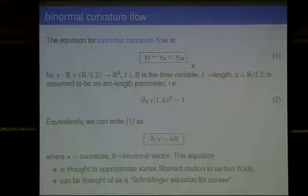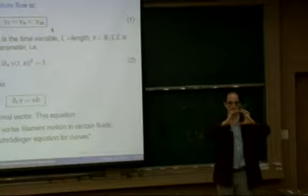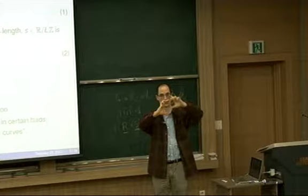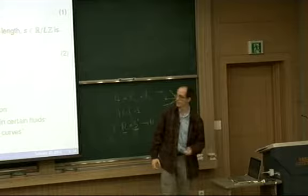To give an example of a solution: if the initial data is a circle, the tangent is in the plane of the circle, the normal vector is in the plane of the circle, and the binormal is orthogonal to the plane. So the circle will move with constant velocity. The velocity is proportional to 1 over the radius — as the radius gets smaller, the curvature increases. That's the equation I want to consider.